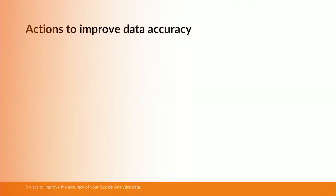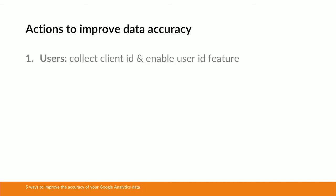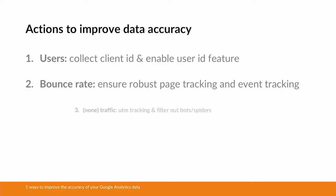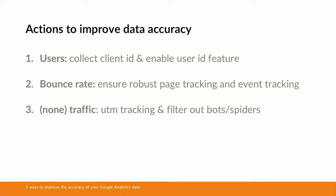So in summary, these are the top five actions to improve your data accuracy in Google Analytics. Firstly, in terms of the users metric, ensure you're collecting the client ID as a custom dimension — that allows you to create meaningful segments and analyse aggregates in more detail. Once you've got that set up, enable the user ID feature to get more insight into cross-device tracking. In terms of bounce rate, ensure you've got robust page tracking and that you're event tracking very carefully — be mindful of the two areas which could artificially skew your bounce rate. In terms of the none traffic channel, ensure you're using UTM tracking effectively and, really importantly, ensure you're filtering out bot and spider traffic.